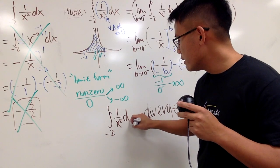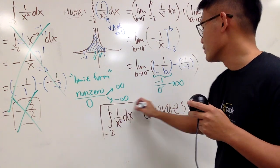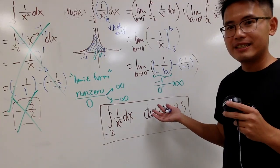the conclusion is that the integral from negative 2 to 1, 1 over x squared dx. This right here. You don't put an equal sign. You don't say equals to diverge. You just say this right here diverges. That's a verb. That's it.